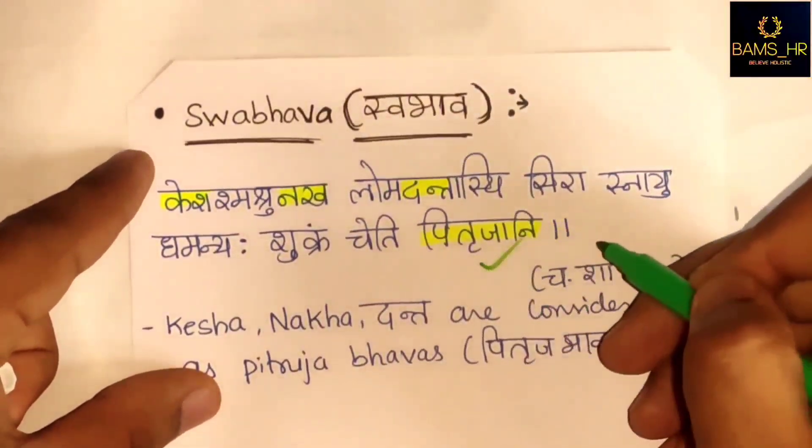Prashastha Danta - healthy teeth qualities: big in Pramana (size), thin (Laghuta), Nirmalata (clean), Snigdha, Shuklavarana (white), Ghana (strong), and Samapurista - all in a uniform layer.